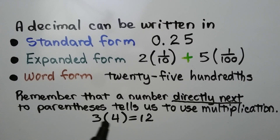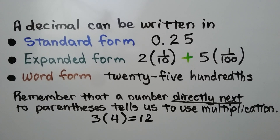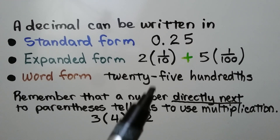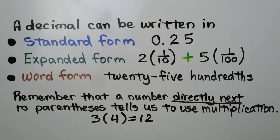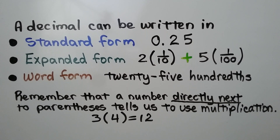For example, three times four equals twelve. As we get older, we're going to start using variables such as the letter x, and we don't want to confuse it with multiplication. So if you can start getting used to using parentheses for multiplication, it'll help you in your math.